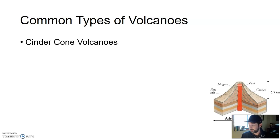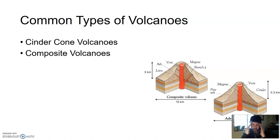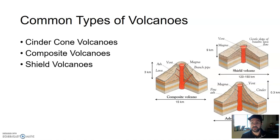There are cinder cone volcanoes, which tend to be the smallest. Composite volcanoes — when we think about volcanoes, this is what we typically think about, what we're picturing: these composite volcanoes. They're bigger, form some of the most scenic mountains on Earth, and they tend to be very explosive.